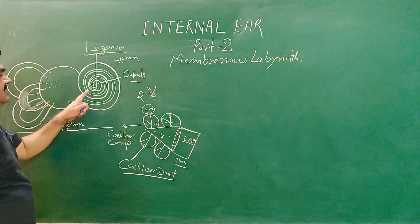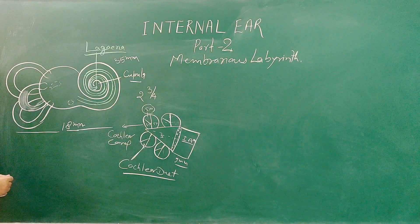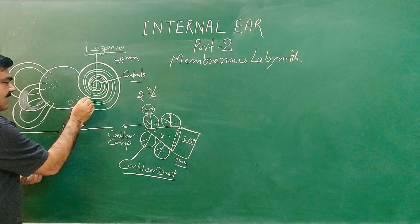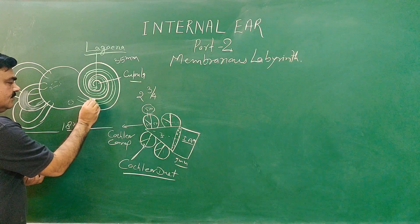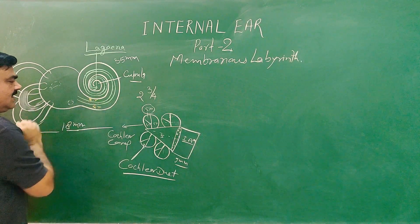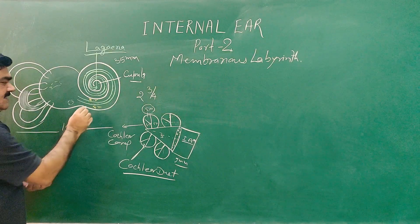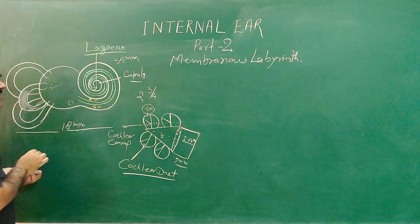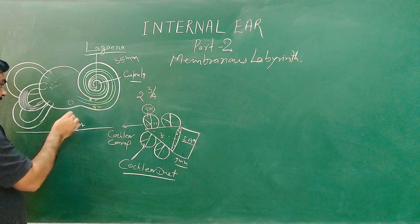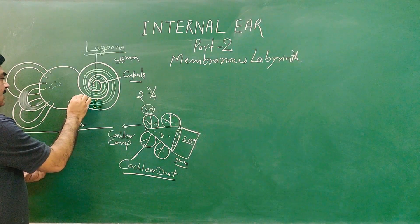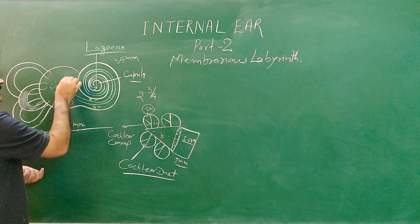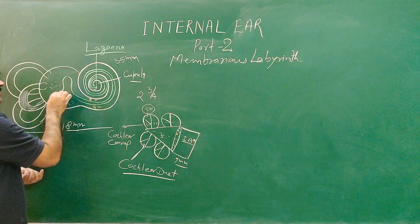This is a cochlear implant. This part is scala vestibuli and this is scala tympani. This is the cochlear duct, which is the scala media. I will discuss this in detail. Here is the position.